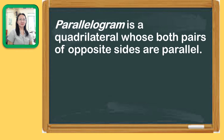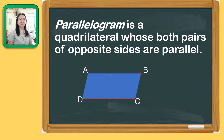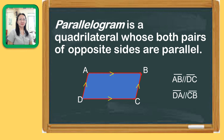Let us start by describing a parallelogram. It is a quadrilateral whose both pairs of opposite sides are parallel. Let us consider this figure, and let us name our quadrilateral ABCD. If side AB is parallel to side DC, in symbols, AB is parallel to DC. The other two opposite sides, AD and BC, are parallel, so in symbols, DA is parallel to CB.